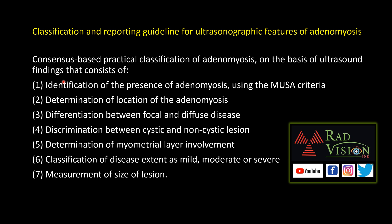There are seven different features we have to assess for describing adenomyosis. First is identification of the presence of adenomyosis. Second is determination of the location. Third is differentiation between focal and diffuse type. Fourth is discrimination between non-cystic and cystic type. Fifth is determination of the myometrial layer involvement. Sixth is classification as mild, moderate, or severe. Seventh is measurement of the size of the lesion.